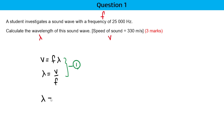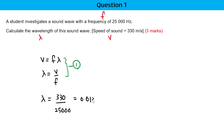So lambda equals V, which is 330, divided by the frequency, which is 25,000 Hz. So the answer would be 330 divided by 25,000, which gives 0.0132 m.